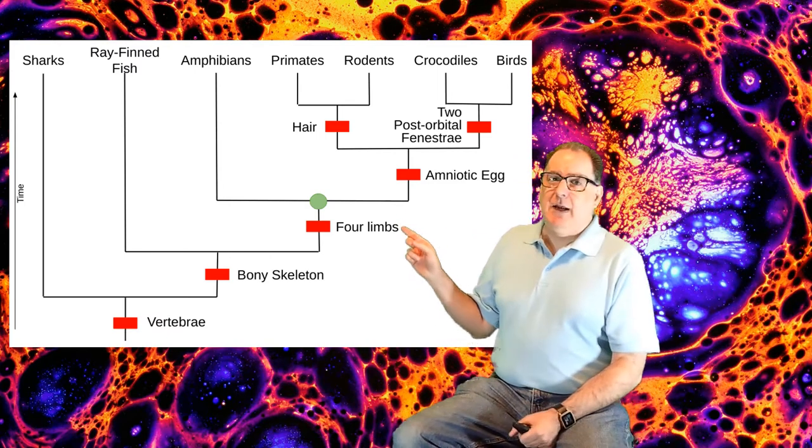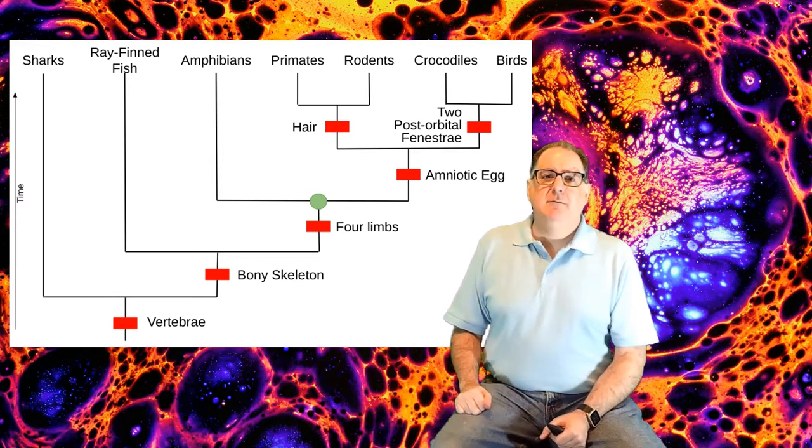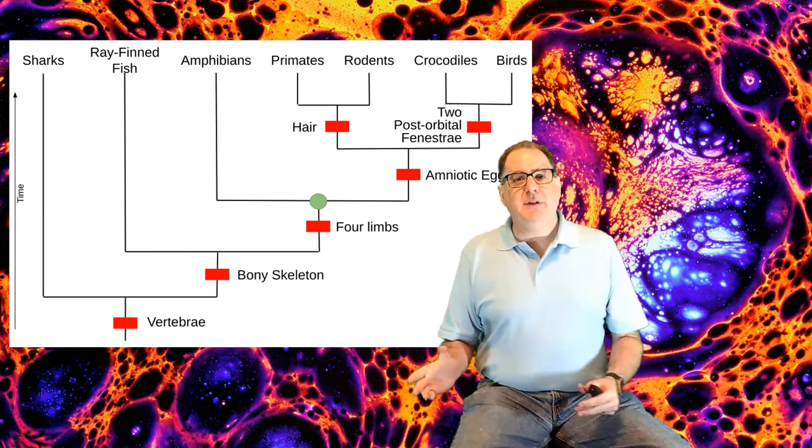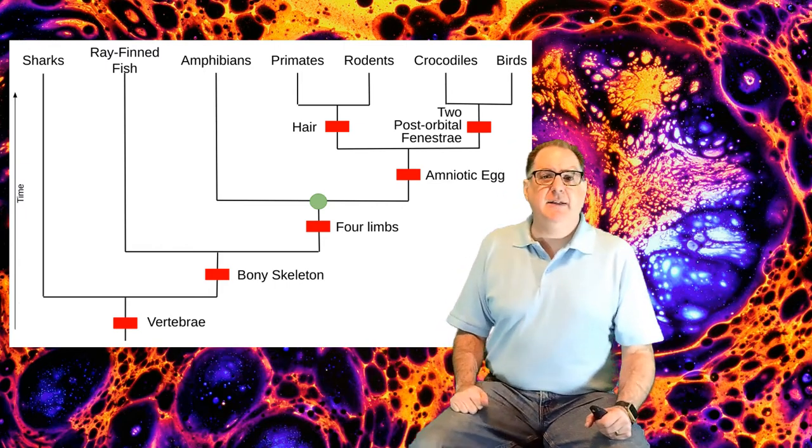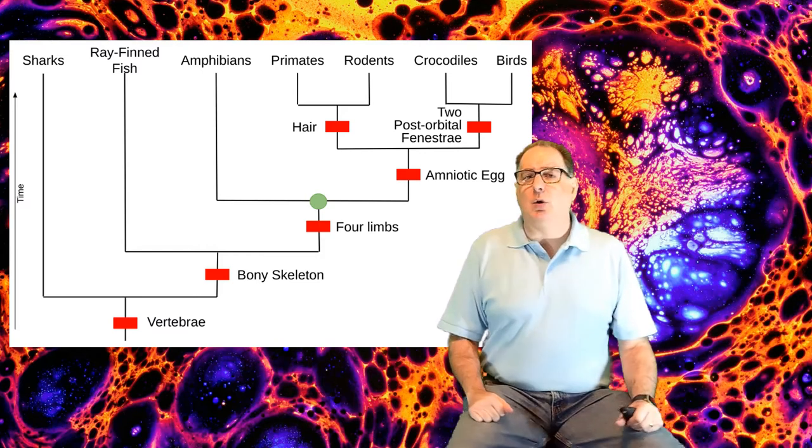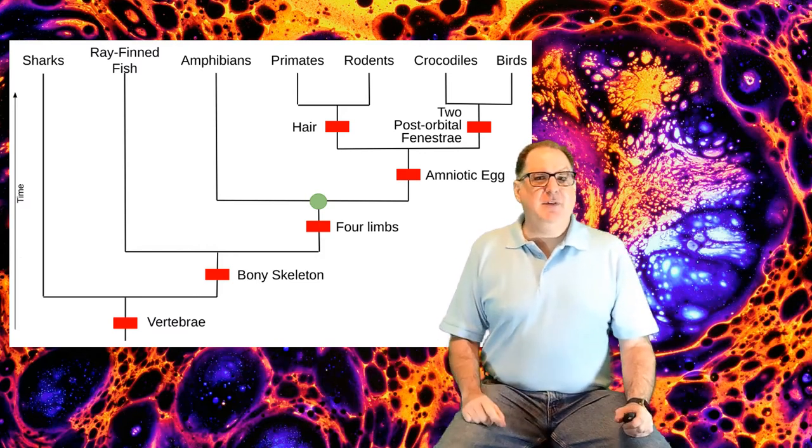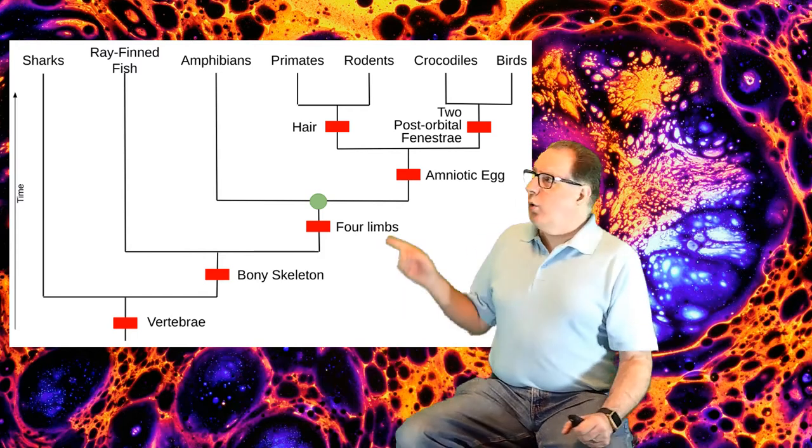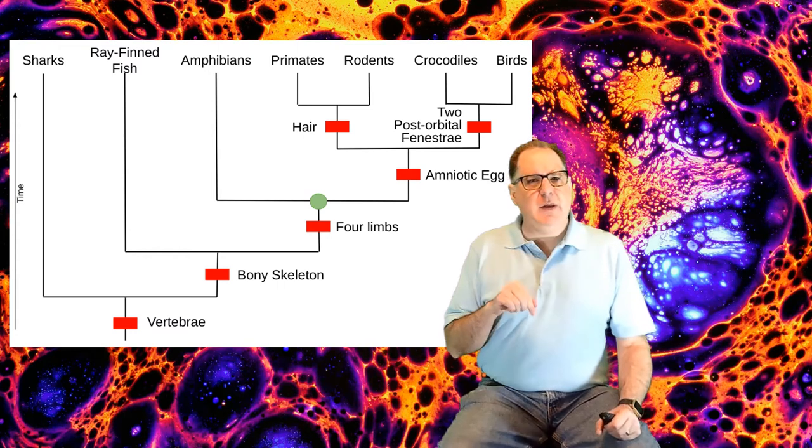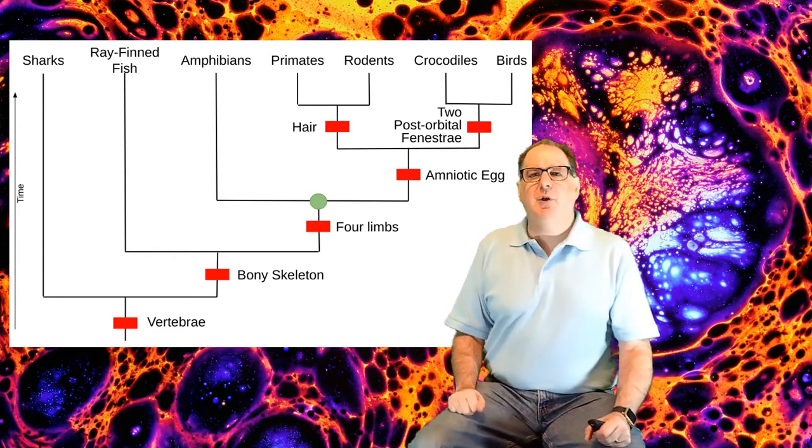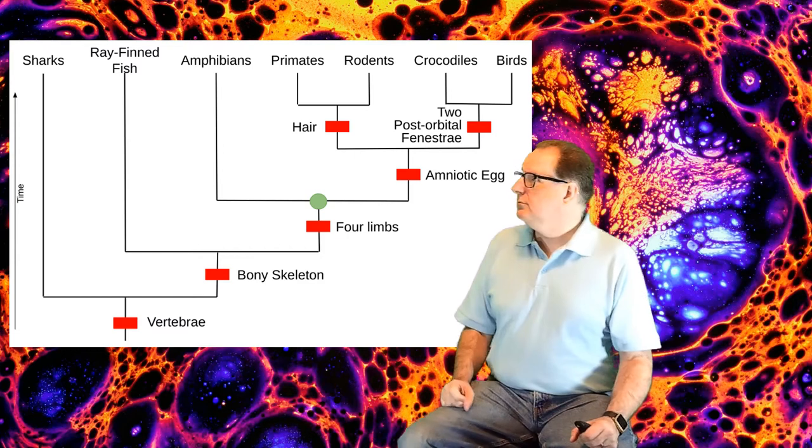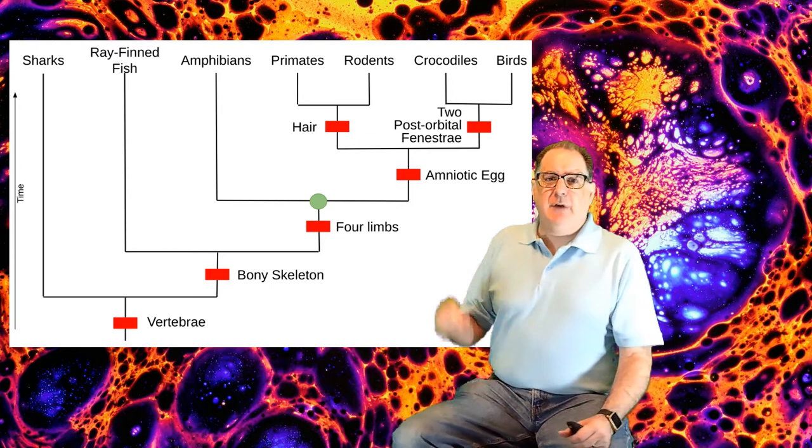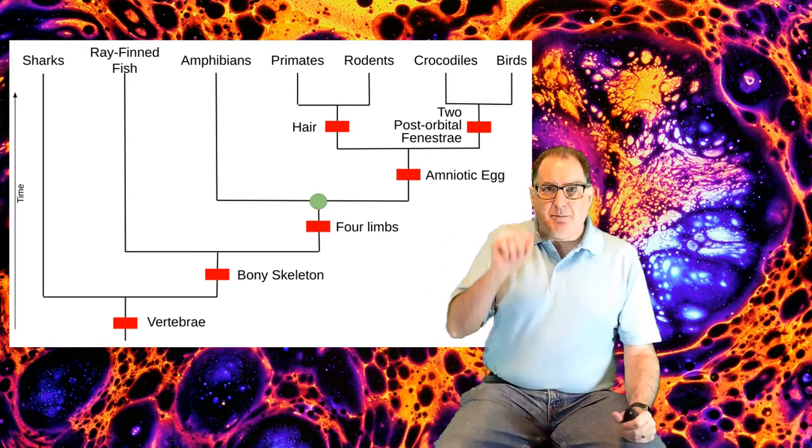This kind of diagram, the cladogram, is like a family tree, but for species. You can tell which species are more closely related, and you can tell the order of some events, but it's generally missing precise dates. According to this, what species are we, primates, most closely related to? You only have to trace down one step to get back up to them.